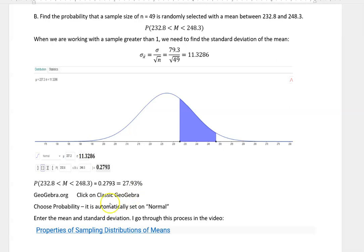Now if you wanted to go do this on classic geogebra.org, you'd want to go to classic GeoGebra and then choose probability. It's automatically set to normal.